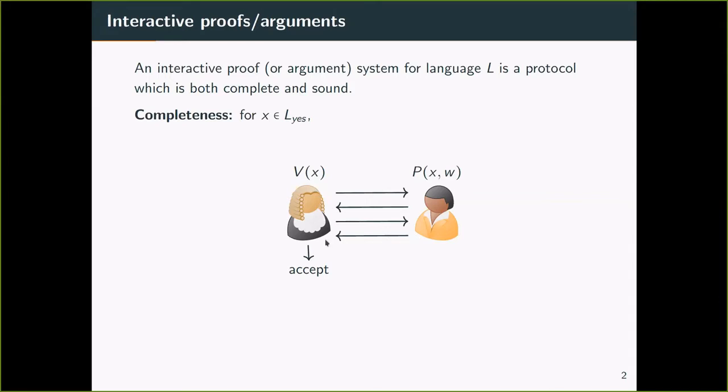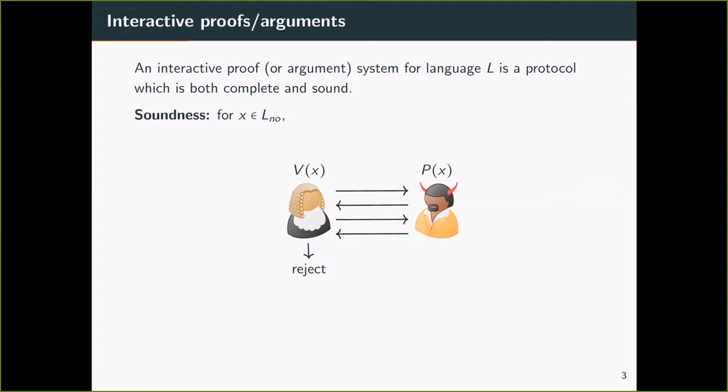A protocol for language L is complete if for all yes instances, there exists a prover called an honest prover who convinces a verifier with high probability. A protocol is sound if for all no instances, no matter how the prover tries to cheat, the verifier rejects with high probability.